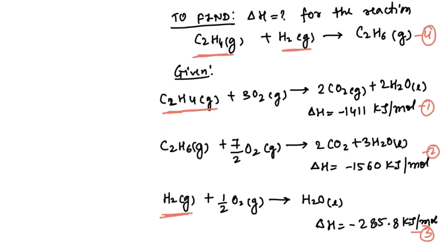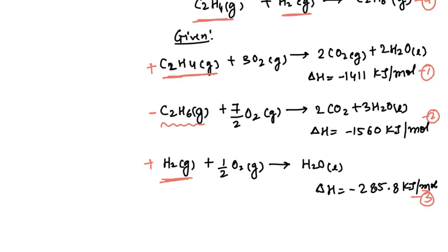Now we want C2H6 on the right hand side, so this should be added, this should be added, but this should be subtracted so that we will get it on the right hand side. Let us just do so and find out what we are getting here.